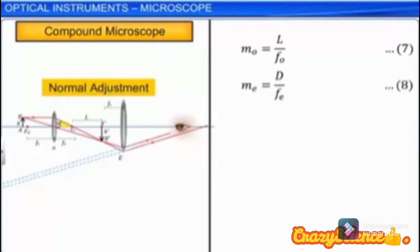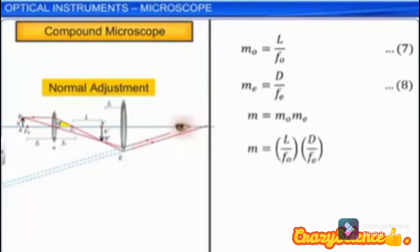If the eyepiece is adjusted such that the final image is formed at the near point, then using equation 6, m_e equals 1 + D/f_e. In such a case, the magnifying power of the compound microscope m equals (L/f_o) × (1 + D/f_e).